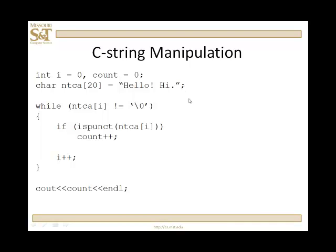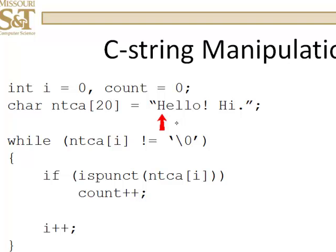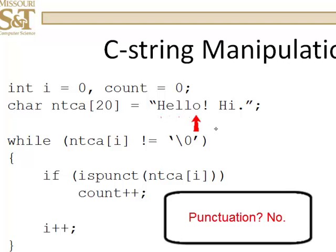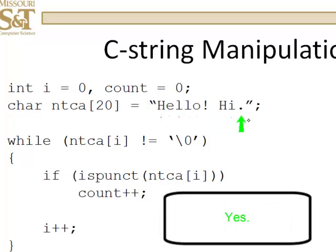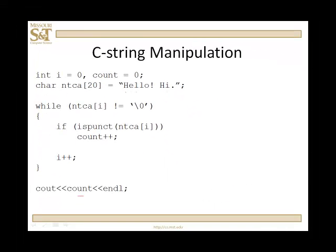C string manipulation operations. We have a null terminated character array 'a' of size 20 initialized to 'hello, hi'. Look at this while loop: while ntca[i] is not the null character — i and count both initialized to zero — we traverse the array. If 'ispunct(ntca[i])' is true, count increments. We walk down the array asking: is this punctuation? We find yes for the comma and yes for the period. Count is incremented twice. When we reach the null, we exit the while loop and output two.